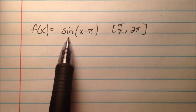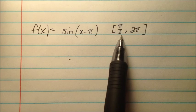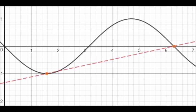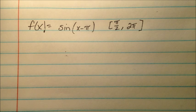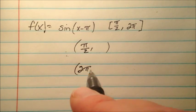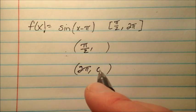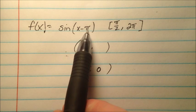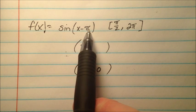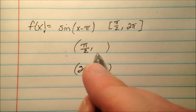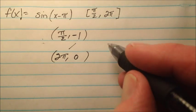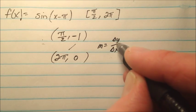In our fifth and final example, we have the function sine of (x minus pi), and we're going from pi over 2 to 2 pi. When we plug in 2 pi: 2 pi minus pi is 1 pi, and sine of pi is 0. When we plug in pi over 2: pi over 2 minus pi is negative pi over 2, and sine of negative pi over 2 is negative 1. So we have our two endpoints, and we can draw a secant line between them.